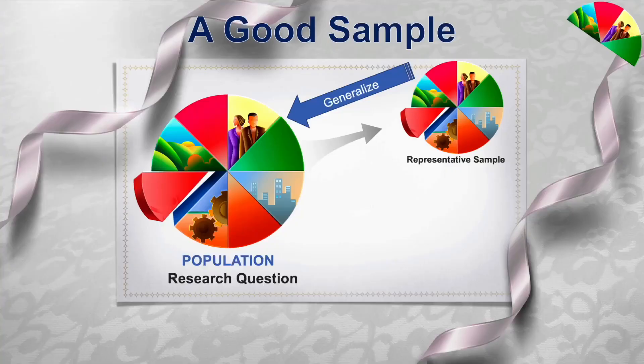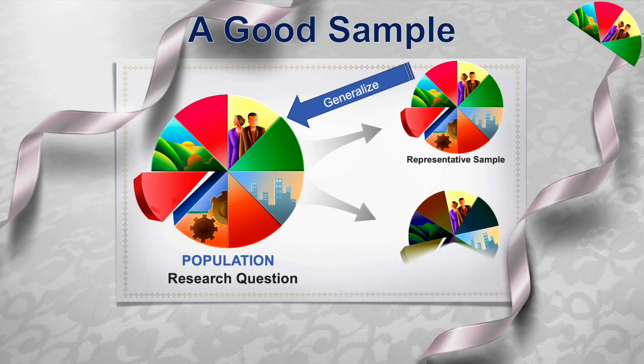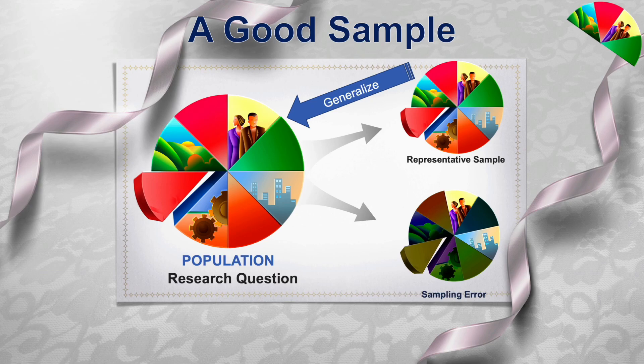However, if our sample is not representative, then what we learn from our sample is not very telling of the population. We would say that we have some sampling error that explains that difference. We want to estimate the characteristics of the population based on what we have learned from our sample.